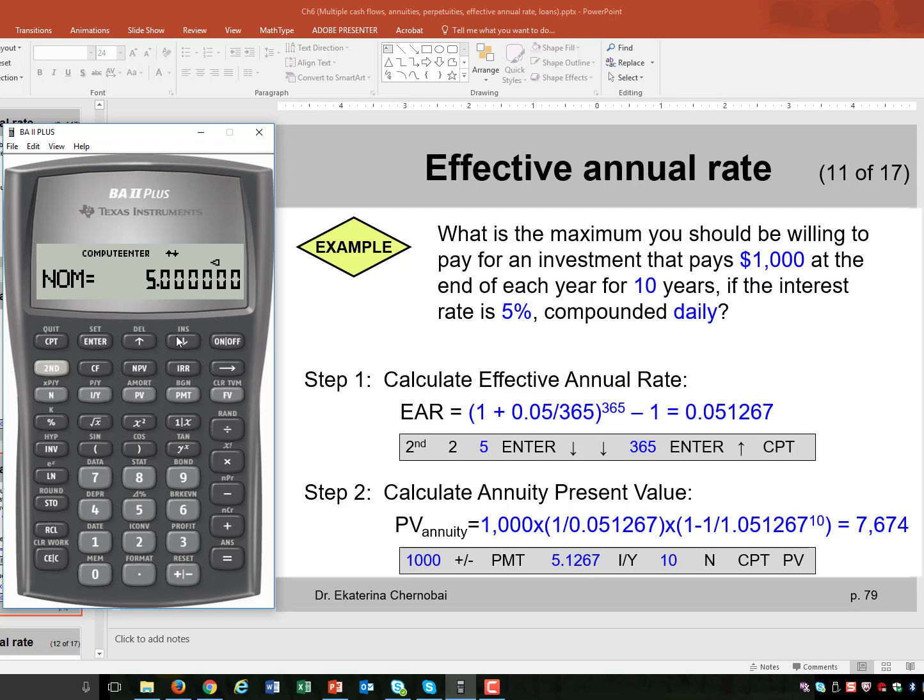Press either up or down arrow key and stop. Keep pressing and stop until when you see compounding per year. C over Y. Change it to what? Change it to daily compounding. How many times a year is that? 365.